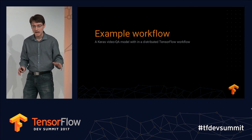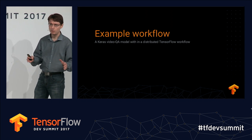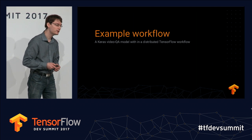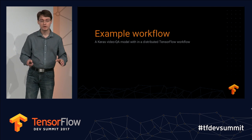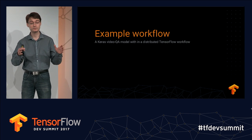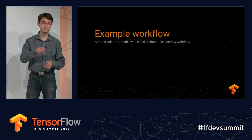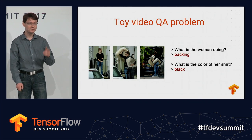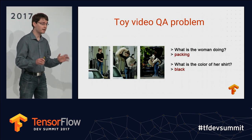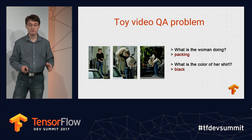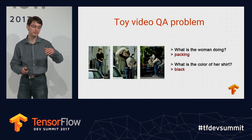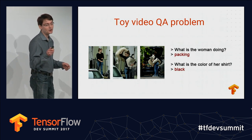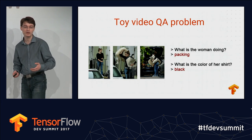To make things a bit more concrete, I will walk you through an example of what your workflow will look like when using Keras with TensorFlow. We'll be looking at a video question answering model, and we'll be using Keras to define a model to solve this problem and train it using the high-level TensorFlow training API in a distributed setting. We have some videos sampled at about 4 frames per second, roughly 10 seconds per video, so about 40 frames per video. And we are asking questions about what's going on in the video.